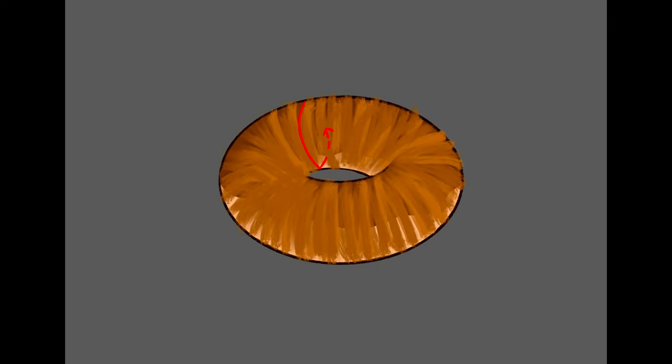any shape with genus one can have hair that is smoothly combed. So you and the coffee cup have the same genus, meaning you're topologically equivalent, and have the same mathematical properties.